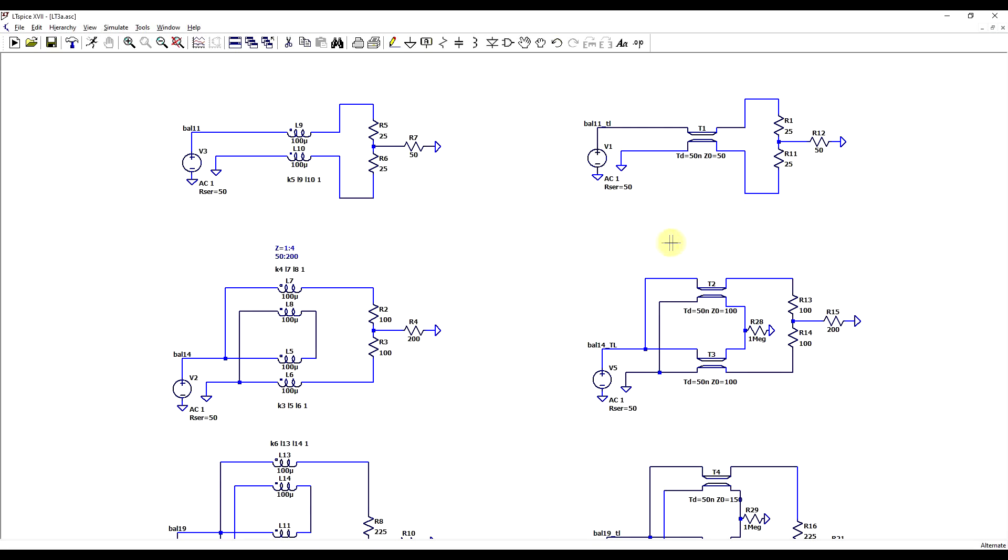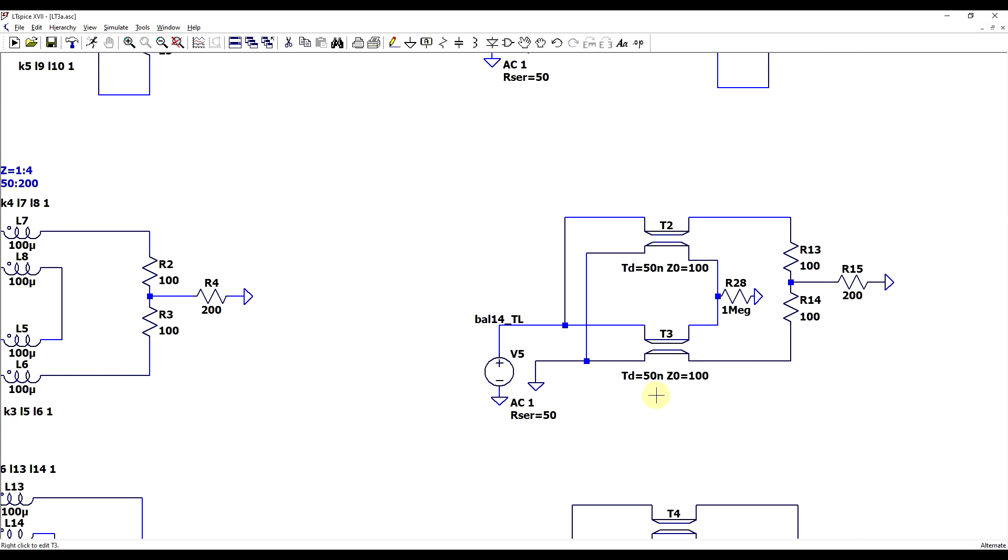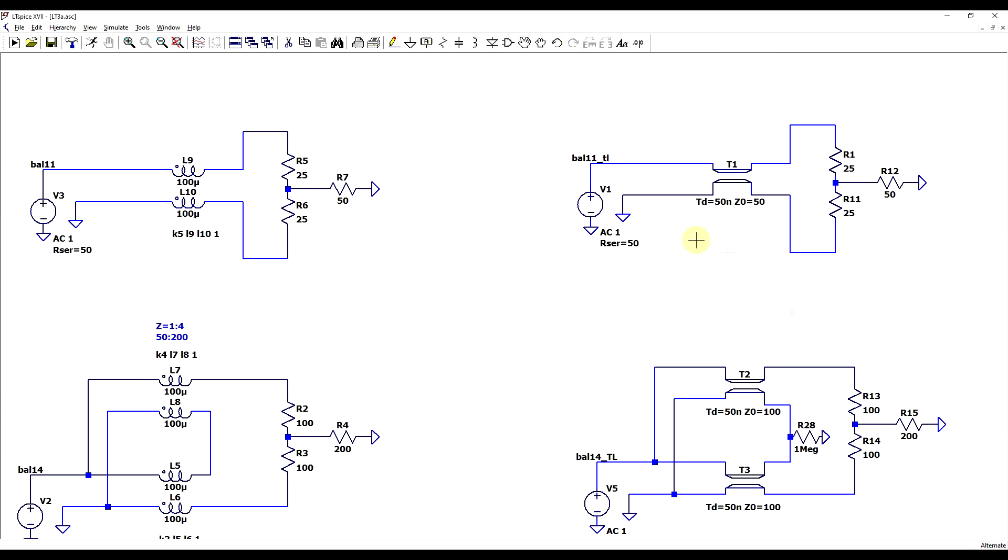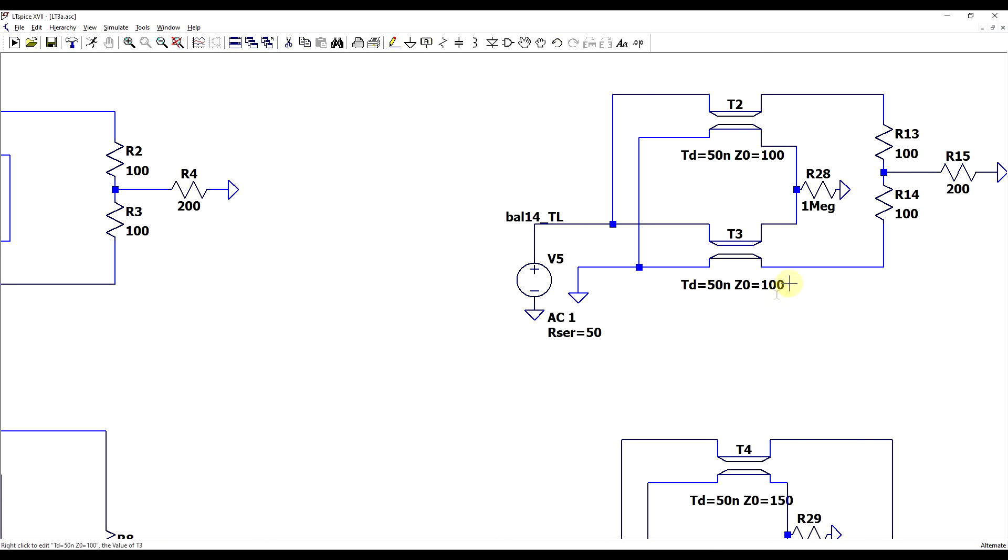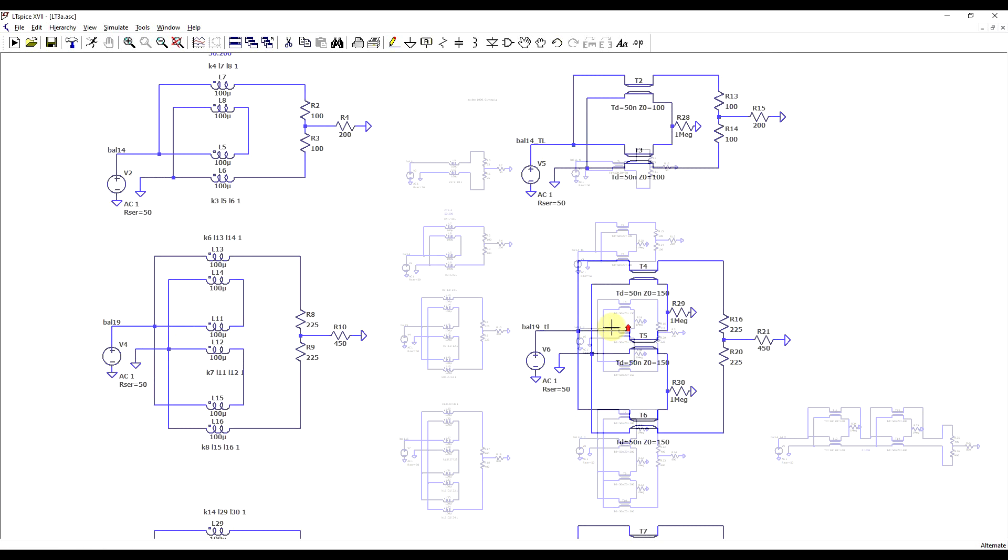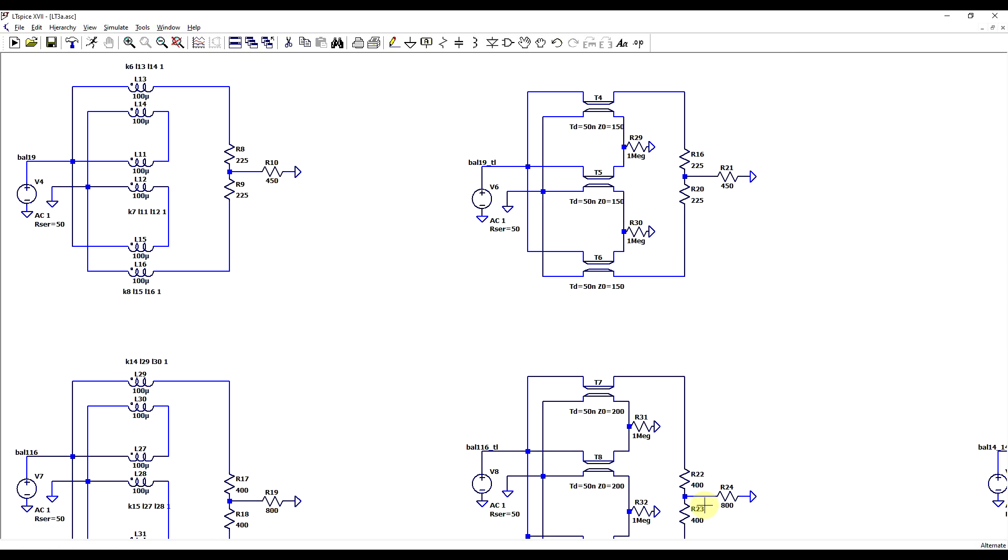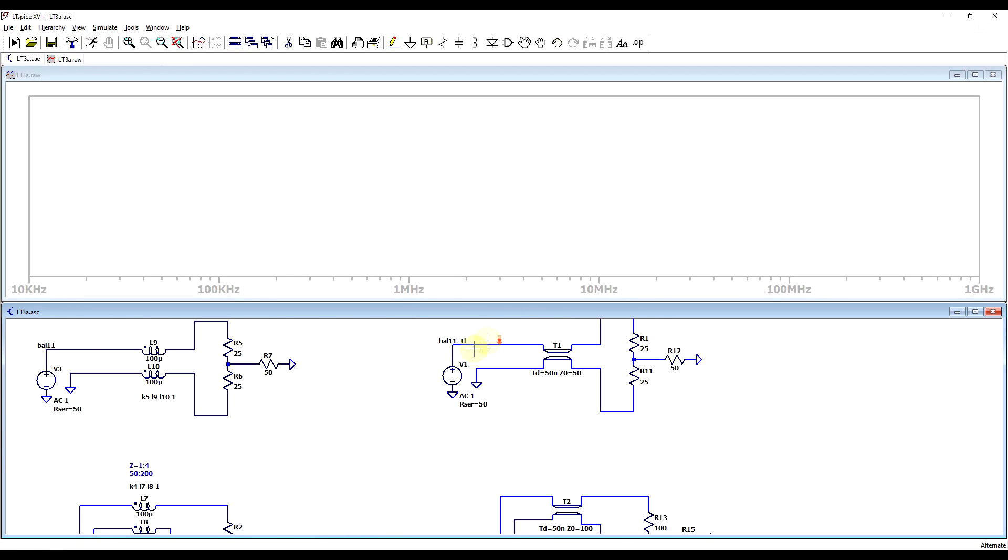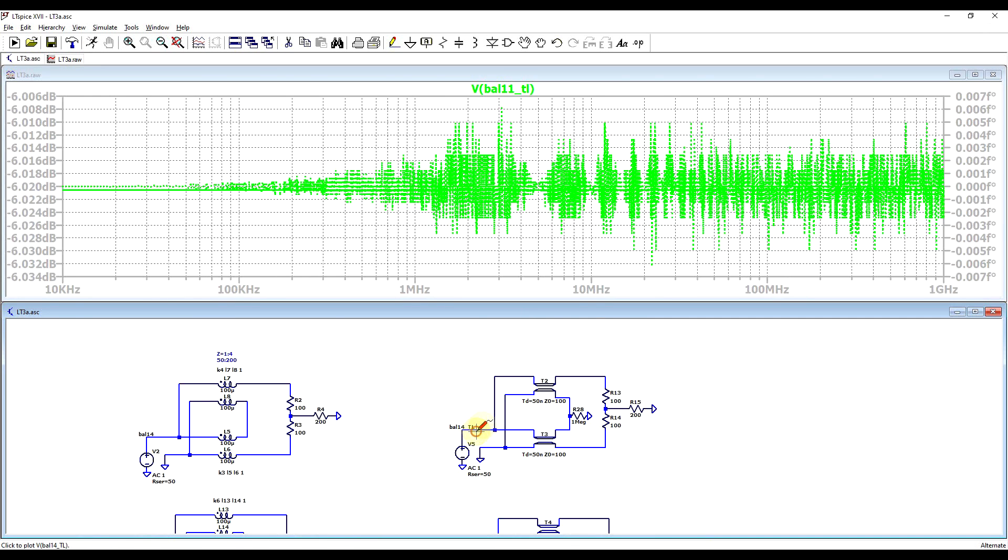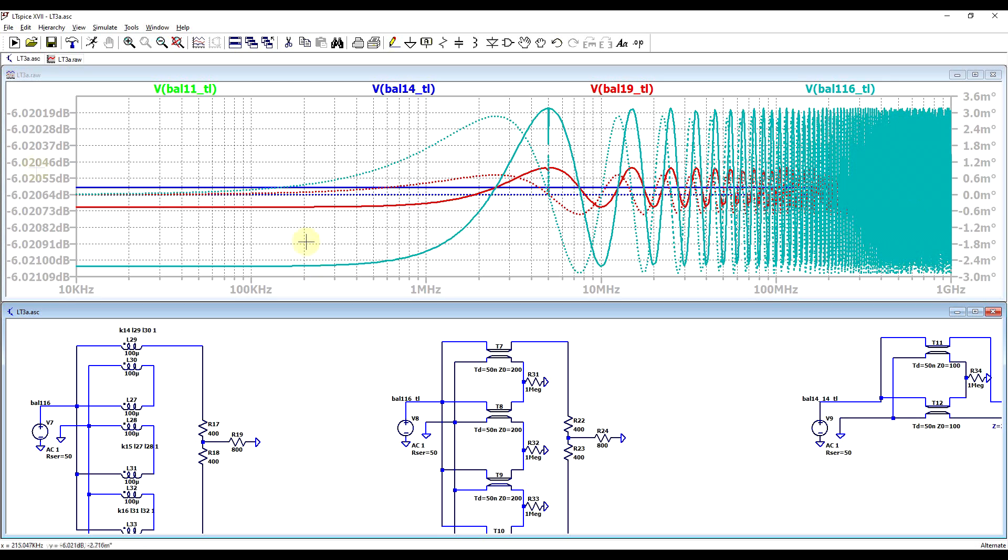To observe the behavior of the transmission line implementation, I created a set of circuits that mimic our previous ones, just that they were implemented with transmission lines. And in all cases, the characteristic impedance that I've used was the square root of the product of the input and output impedance. So in all cases, the signal source is 50 ohms, and the lines are 50 ohms for the 1 to 1 balun, 100 ohms for the 1 to 4, 150 for the 1 to 9, and finally 200 for the 1 to 16. And if we run the circuit and we look at the signal on the input side, in all cases we get a more or less flat response at minus 6 dBs, without any sort of low frequency corner because of the ideal behavior of the transmission lines.